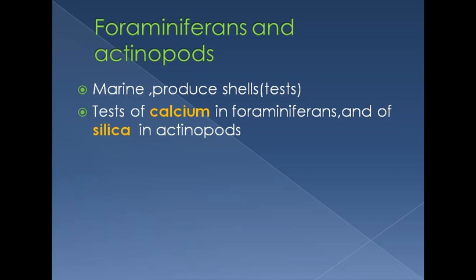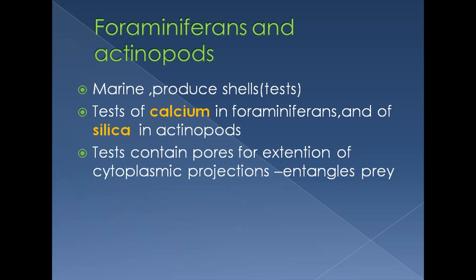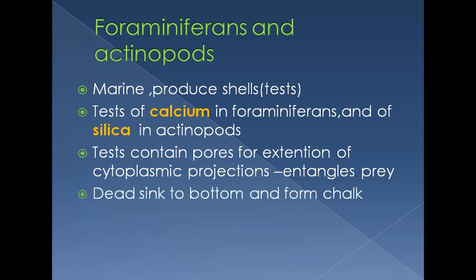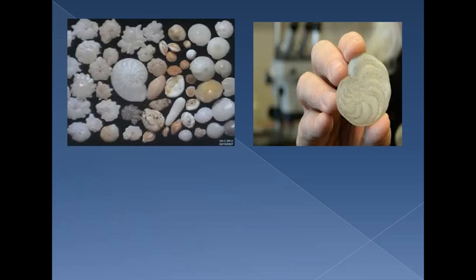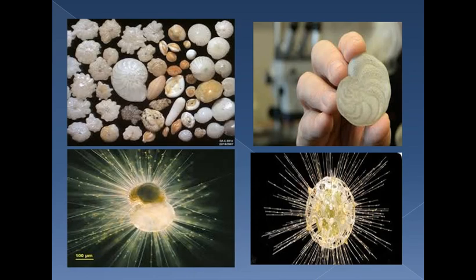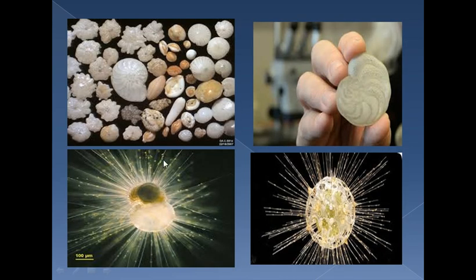The test or shell is made of calcium in foraminifers and silica in actinopods. The test contains pores for extension of cytoplasmic projections — pseudopodia — which help in capturing prey. Dead foraminifers and their shells settle to the bottom and form chalk. The pictures here show different actinopods and foraminifers with diversity in shell shape. Actinopods resemble sun-like animals with ray-like pseudopodia.